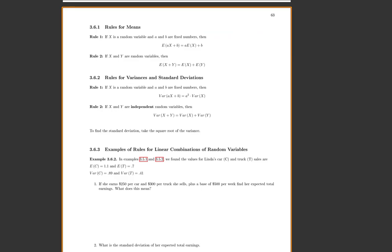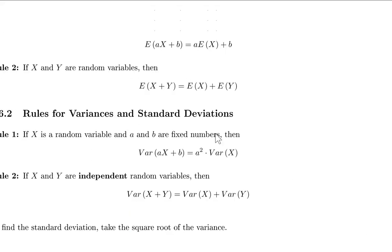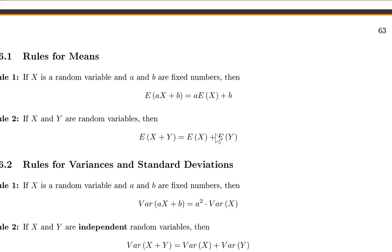Now let's look at the actual rules for means and variances. If x is a random variable and a and b are fixed constants, then the expected value of a·x+b equals a times the expected value of x, plus b. And if you have two different random variables, the expected value of x+y is just the expected value of x plus the expected value of y. Pretty simple for means.